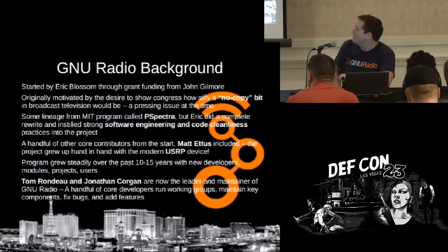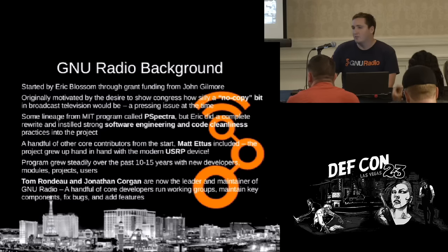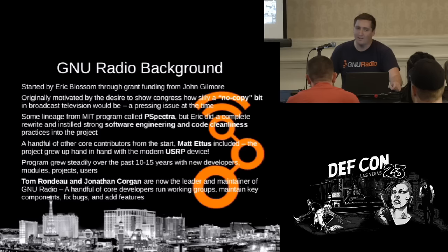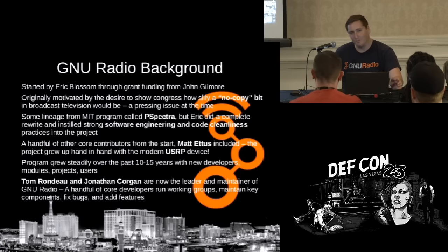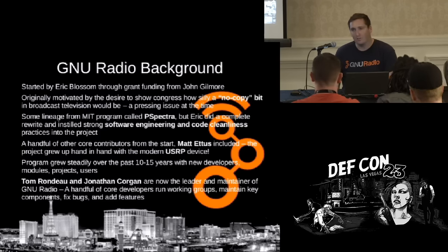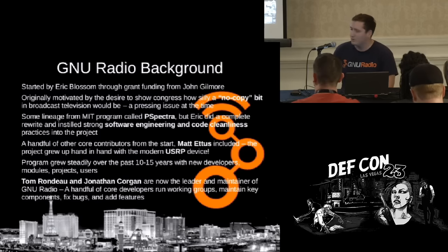Intro to GNU Radio — a brief history. GNU Radio was started by a grant from John Gilmore to Eric Blossom. At that time, Congress was proposing to put a bit in broadcast television called the no-copy bit, which tells your receiver equipment you can't record a show because a bit is set. As a point to show Congress how silly that was, this project was born — here's an open source TV receiver, and if it's open source, it's pretty easy to flip a bit. It was born out of a program at MIT called P-Spectra, a predecessor that did stream processing software radio, and then Eric Blossom did a fresh rewrite.